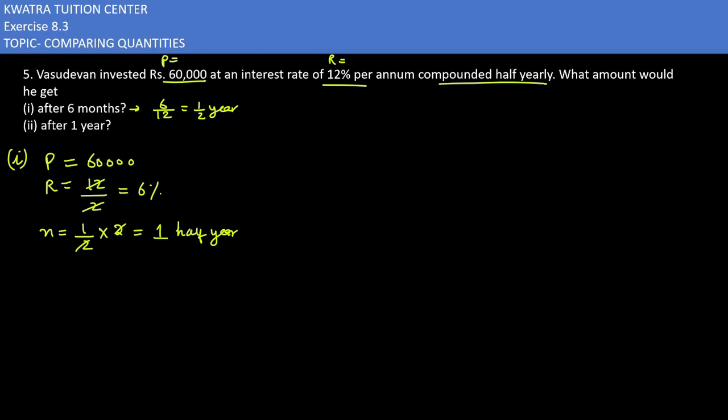Amount we will find out in this case. So, amount would be principal, 1 plus R over 100 raise to power n. And principal, how much? 60,000. And 1 as it is. R how much? 6. 6 over 100 raise to power n. n how much? 1. So, it will be 60,000 into 106 over 100. Because this square is not 1 power, so it will be 1. 2 zeros will be cancelled. So, you are left with 600 into 106, which is 63,600.